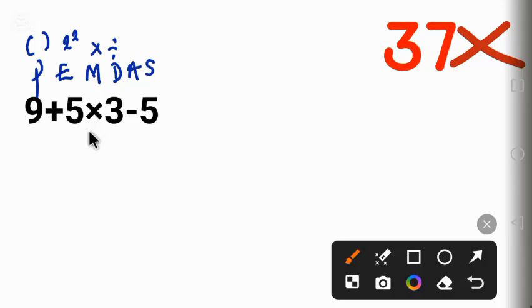So we have 9 plus 5 times 3, which gives us plus 15 minus 5.